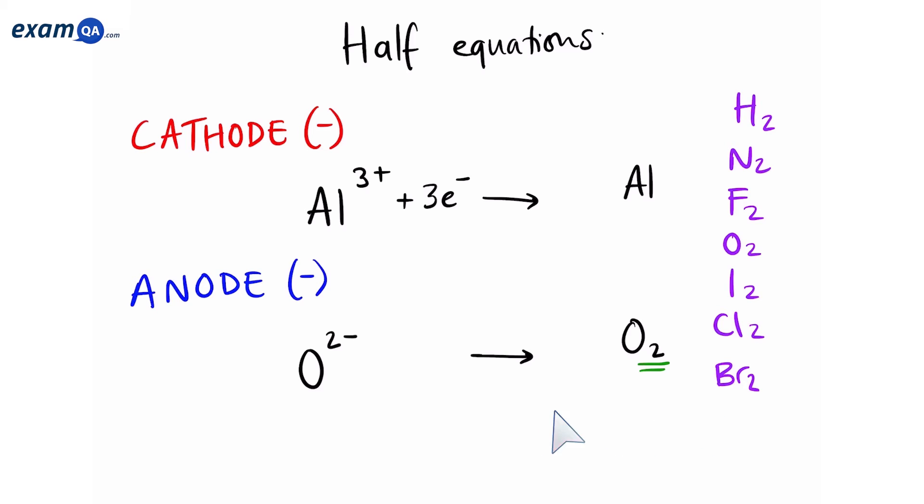So, first of all, let's balance the atoms. There are two oxygens on the right, so I'm going to put a two here. Now, let's balance the charges using electrons. First of all, the overall charge on the left is two lots of two minus, so that's a four minus. The charge on the right is zero. So, we're going to add four electrons to the right. Now, the overall charge on the right is also four minus.